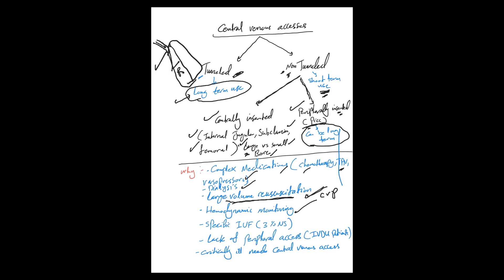Specific IV fluids like three percent normal saline - in our hospital we always require a central line for this. Most hospitals will require that as well. Lack of peripheral access, mainly in IV drug users. Although some patients will have very difficult peripheral access, so there's no way to get peripheral access. So you use a central line. Critically ill patients need central access - non-tunneled, centrally inserted.